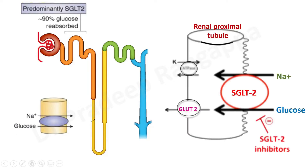Looking carefully at the renal proximal tubules: sodium and glucose are meant to be reabsorbed from the proximal tubule. By the action of SGLT2 inhibitors, reabsorption doesn't happen; rather, secretion into the tubules occurs. There is promotion of glycosuria — glucose is pushed back into the proximal tubule, sodium is pushed back into the proximal tubule, glycosuria happens, and sugar control is achieved. This is the mechanism of action of SGLT2 inhibitors.